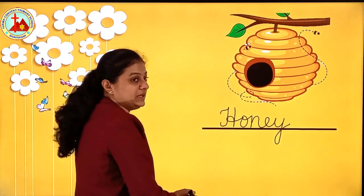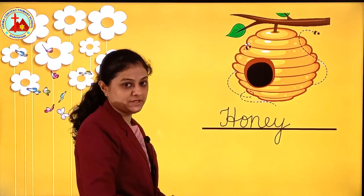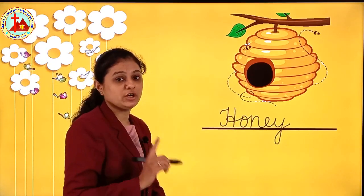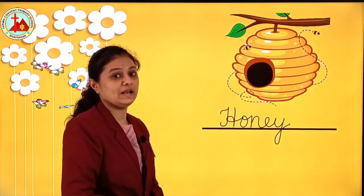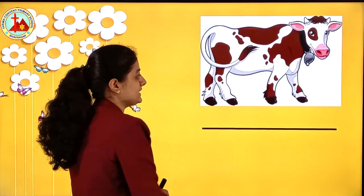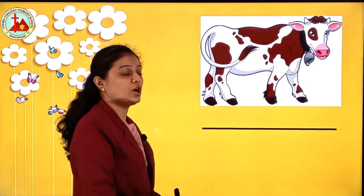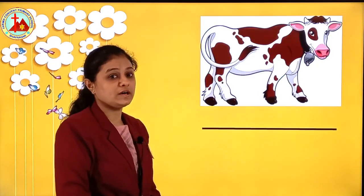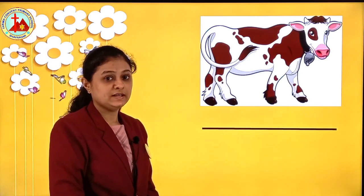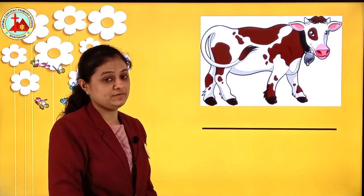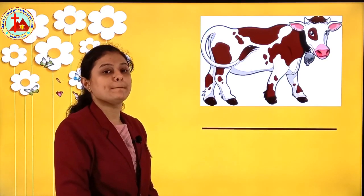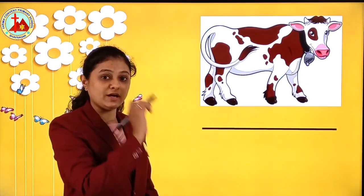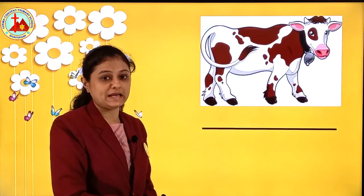The first letter will be capital. And do not lift your pencil while writing. The next picture is of cow. What does cow give us? Cow gives us milk. Find the spelling of milk from the bracket.